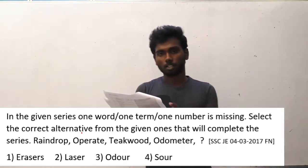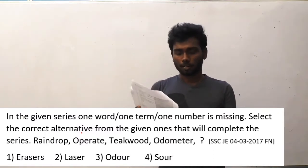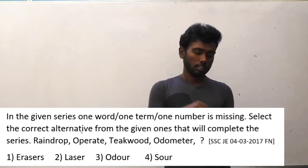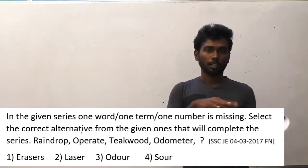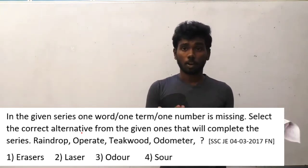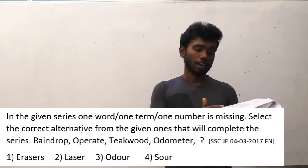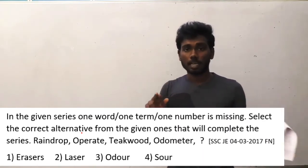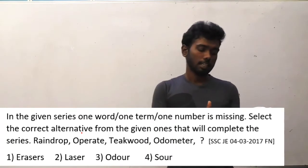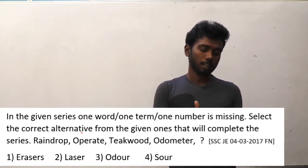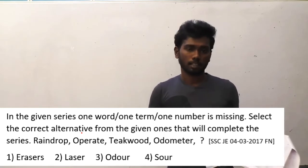I am going to reveal the logic now. The last two letters of RINDROP is OP. That is the logic — the last two letters of each word are the first two letters of the next word. RINDROP ends in OP, so OPERATE starts with OP. OPERATE ends in TE, so TECUDE starts with TE. TECUDE ends in OD, so ODOMETER starts with OD. ODOMETER ends in ER, so the next word is ERASER. The answer is option A, ERASER.